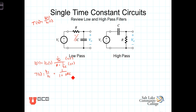Recalling from our previous studies of frequency-dependent circuits, the cutoff frequency of this low-pass filter was 1 over RC. We're going to call the cutoff frequency omega-0, which is equal to 1 over RC. When we do that, the transfer function becomes 1 over 1 plus s over omega-0, the cutoff frequency.